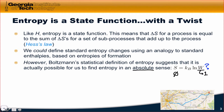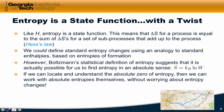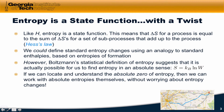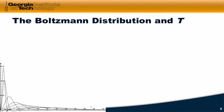For a typical macroscopic thermodynamic system, W is massively, massively huge. So under what conditions is W equal to 1? If we can locate and understand this absolute zero of entropy, we can work with absolute entropies without worrying about entropy changes or standard entropy changes. So let's try to understand the absolute zero of entropy and W equals 1 in a little more detail.